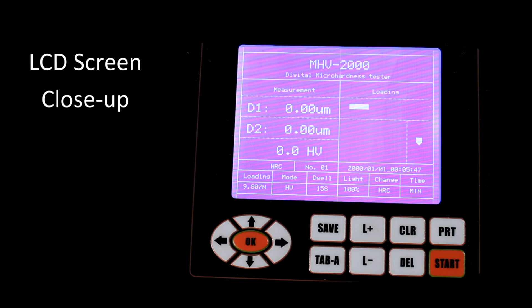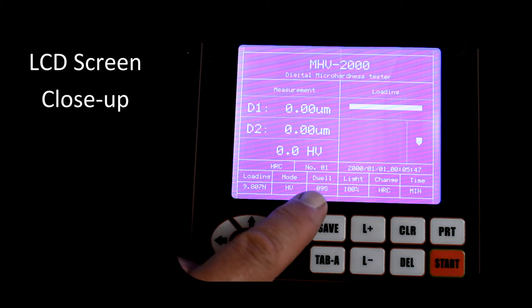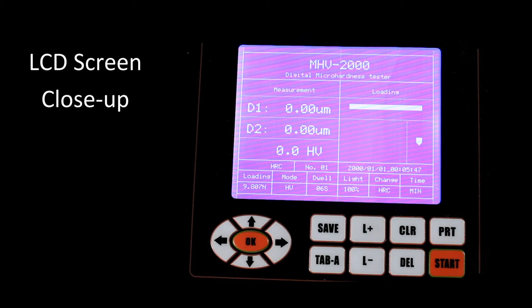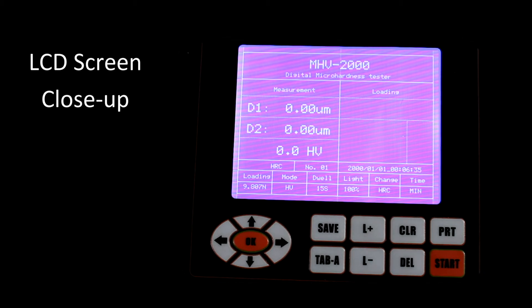Go ahead and start the indent. See the load is being applied. And the dwell time is counting down. Then we see the load is being removed. And that buzzer means that the indent is out of the way. So now we go ahead and rotate the turret to the 40x objective.